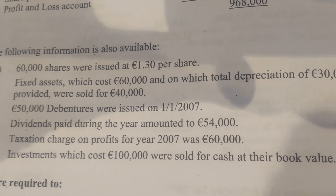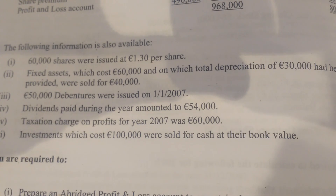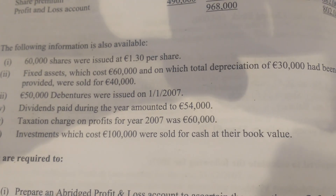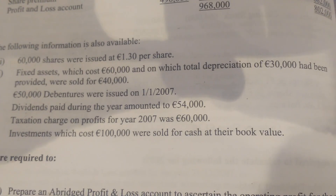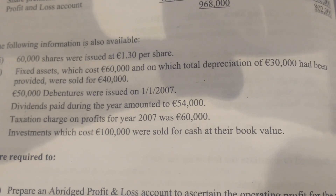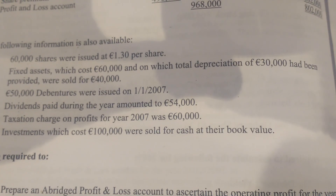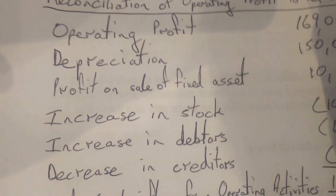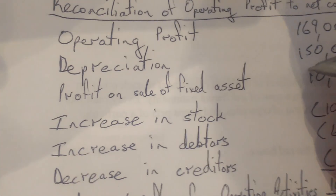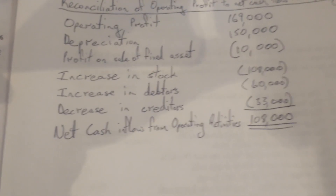The fixed assets cost 60,000 and total depreciation of 30,000 had been provided, which means the net book value in our books was 60,000 minus 30,000, which is 30,000. We sold them for 40,000, so we sold them at a profit of 10,000. The profit was 10,000, and if it's a profit, we're subtracting it. Hopefully that gives us a figure of 108,000.